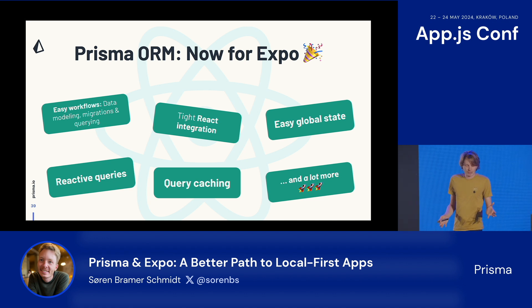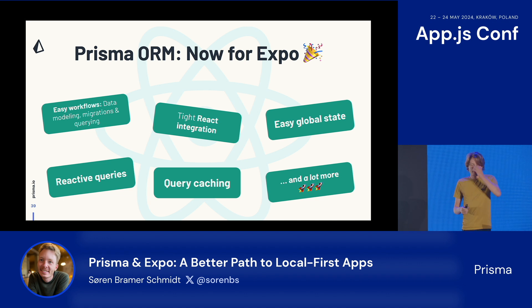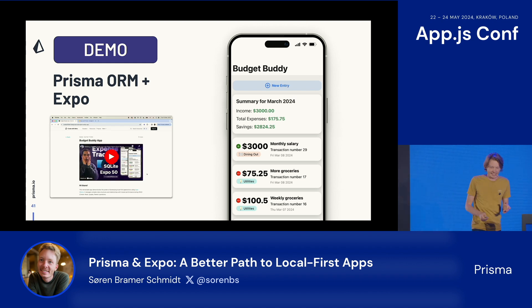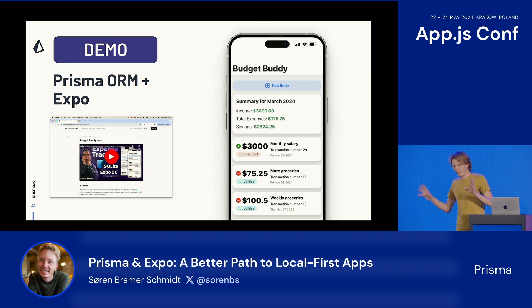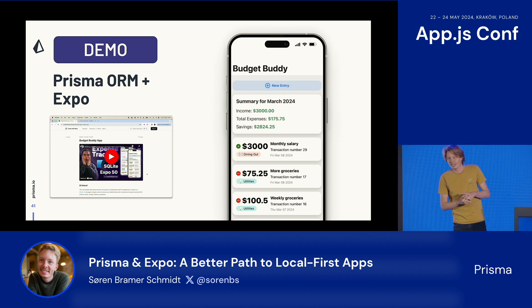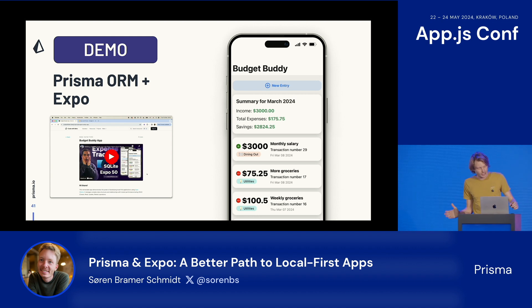It brings the three workflows I talked about before: data modeling, migrations, and querying. In addition, we have spent the last six months creating what I call tight React integration, which brings reactive queries and query caching. To show you what this means, we are going to do a little live demo. I went to Google and searched for Expo and SQLite, and found this app — there's a guy called Beto who builds a bunch of demo apps, and this one uses SQLite. So let's use this to demonstrate.